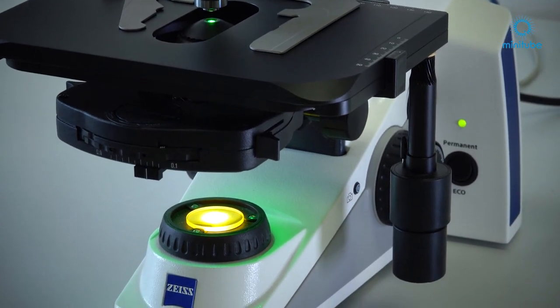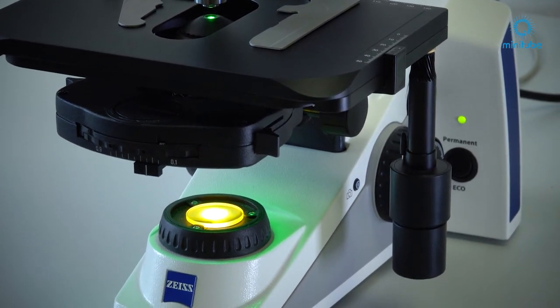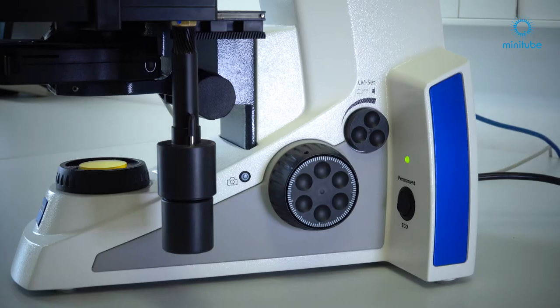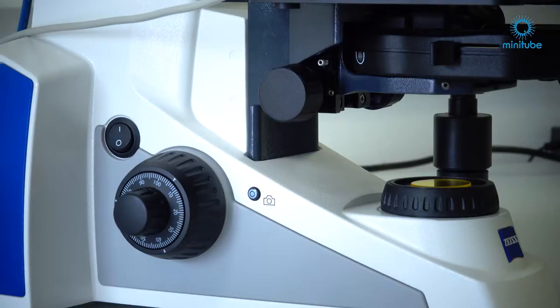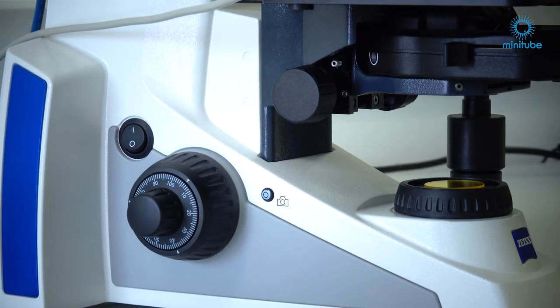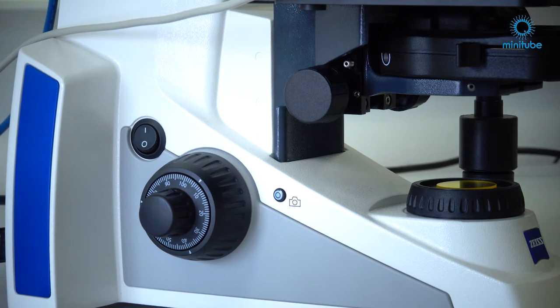The condenser with aperture diaphragm and the field diaphragm. Here you can see the knob for light intensity and the focusing drive for fine and coarse adjustments on both sides of the microscope and the main switch.